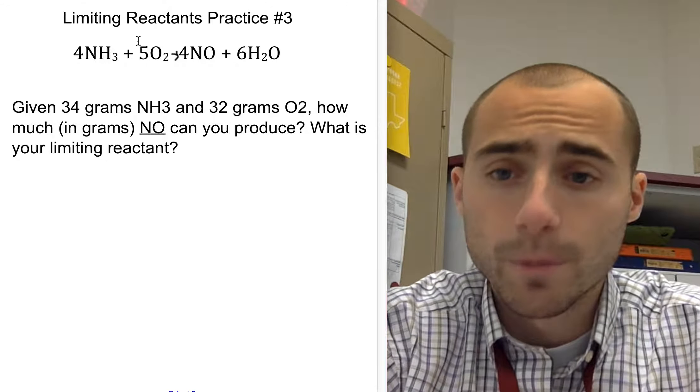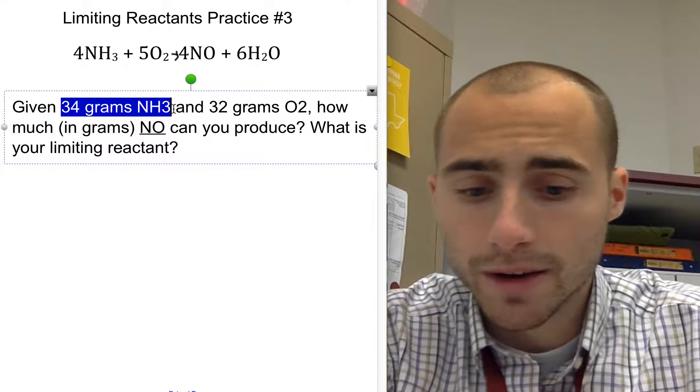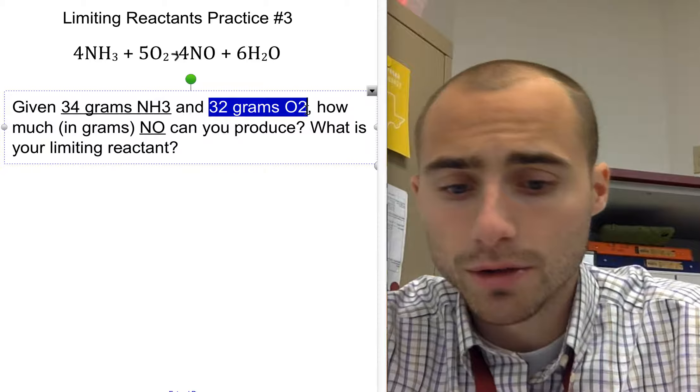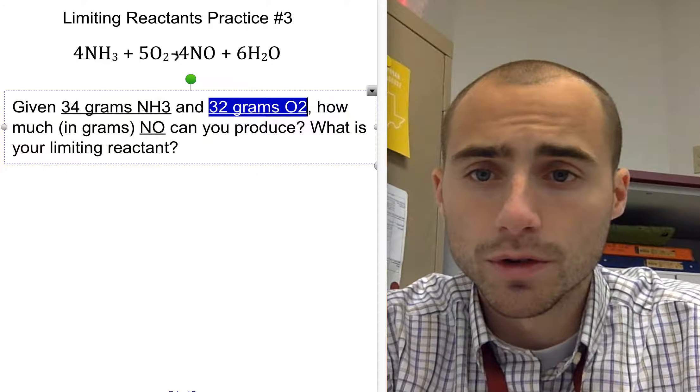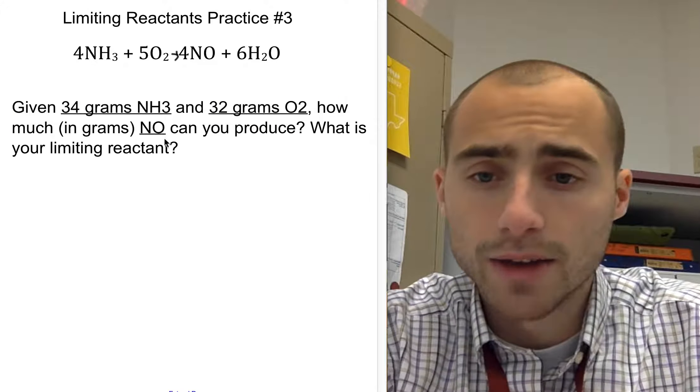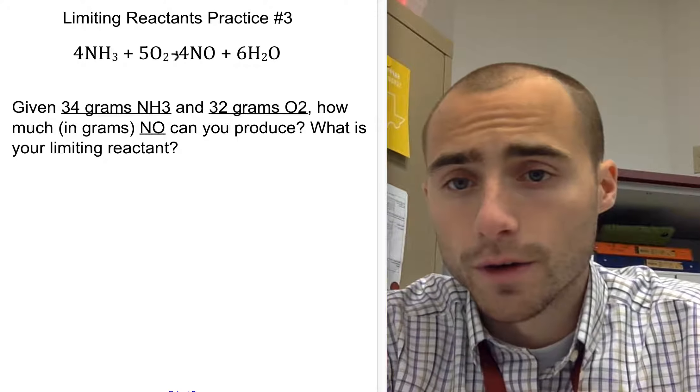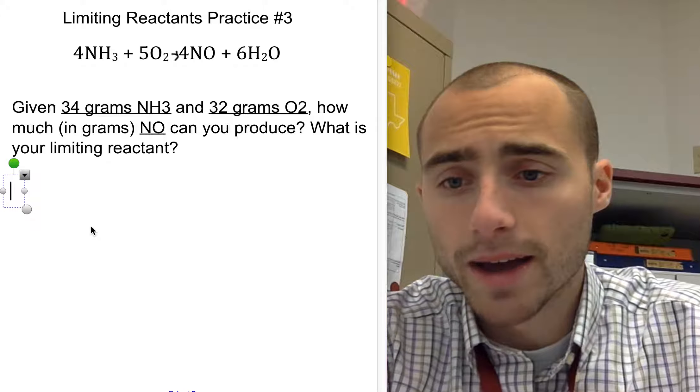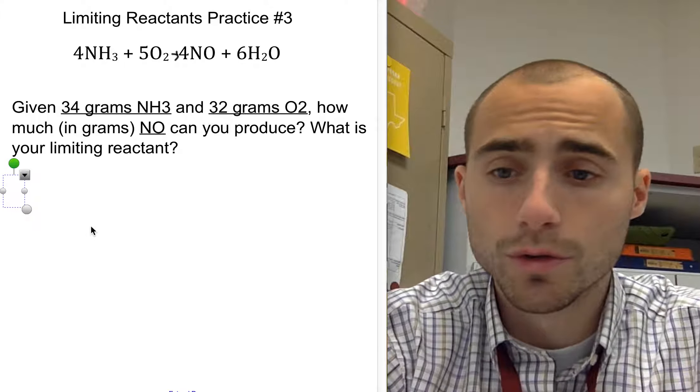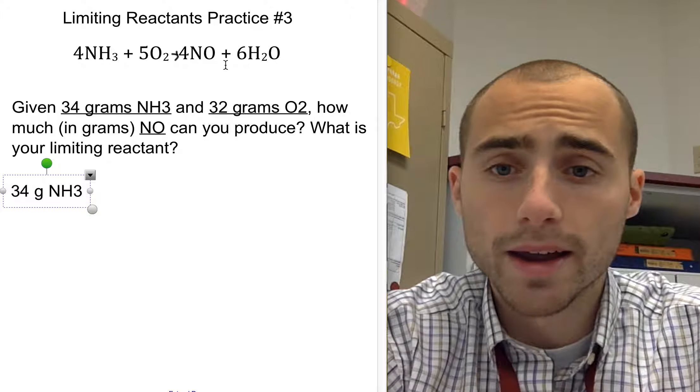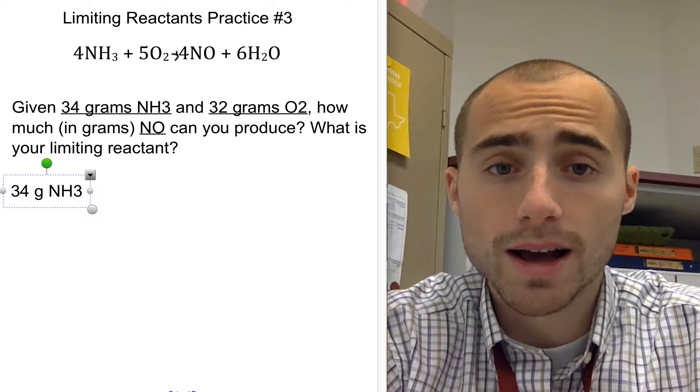So it's always a good first step when you're reading the problem. You can go ahead and identify the important information. We underlined 34 grams NH3, 32 grams of O2, and then I also underlined nitrogen monoxide. So we know that's the product that we are dealing with. First, I take down my first given, my reactant, because we have to convert our reactants to products. So we have 34 grams NH3, and we want to convert that to grams of nitrogen monoxide.